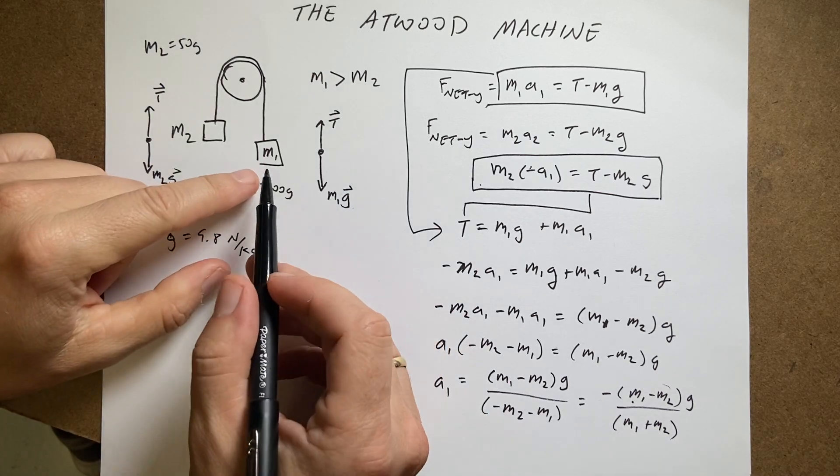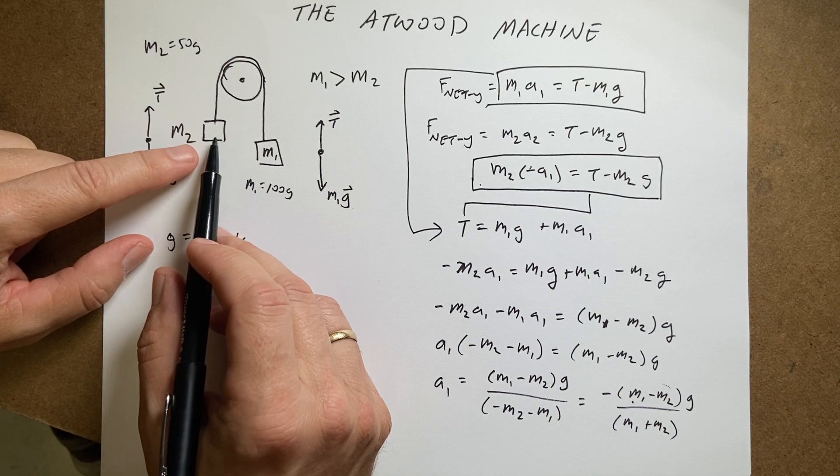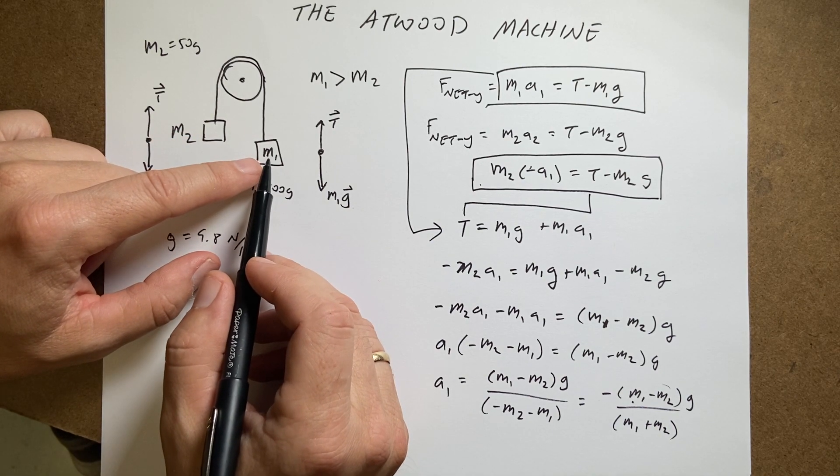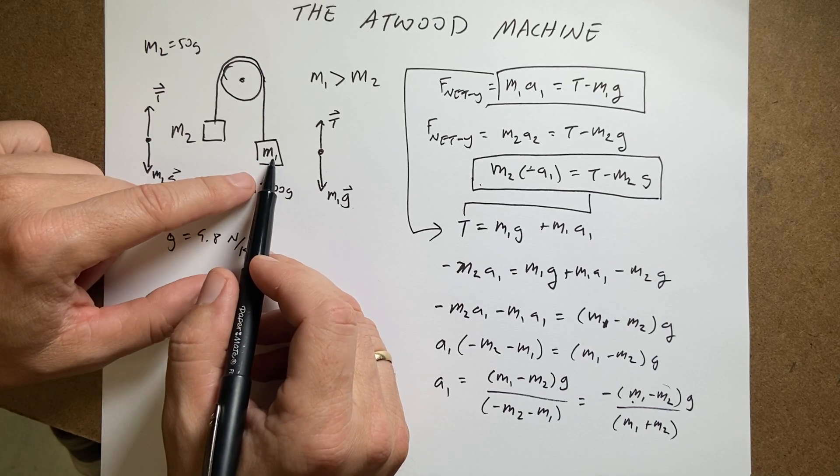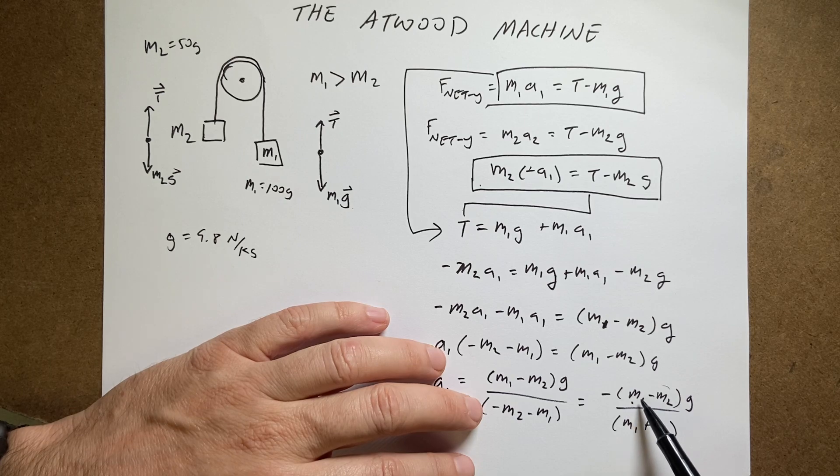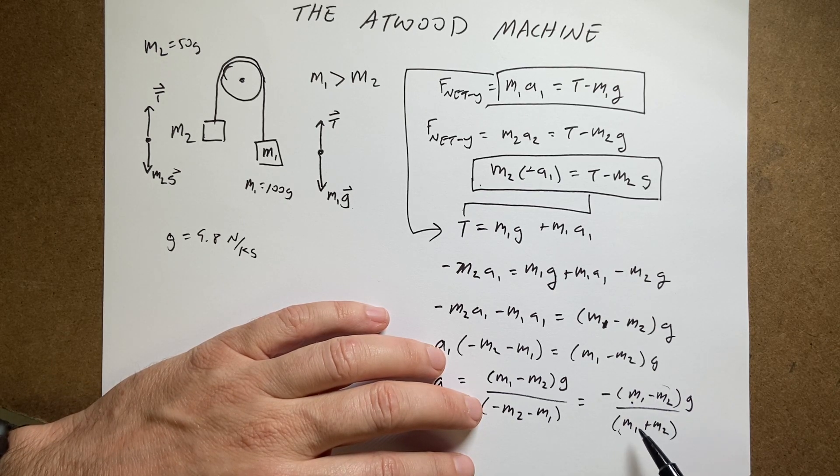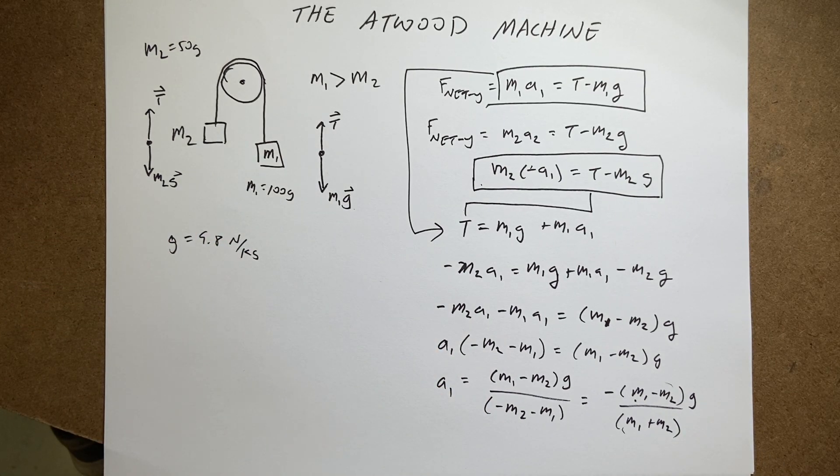And one more thing. What if this was like 5 million kilograms and that was a micro kilogram? Then this should just fall like free fall acceleration, right? So if m1 is much greater than m2, then the acceleration should be g. So if I have m1 much greater than m2, then this is approximately m1, and this is approximately m1. So if m1 over m1, I just get g, negative g. So that's true too. So that's all good.